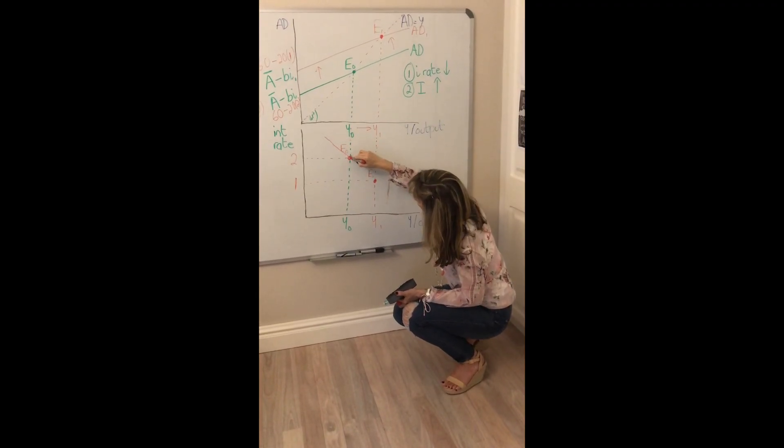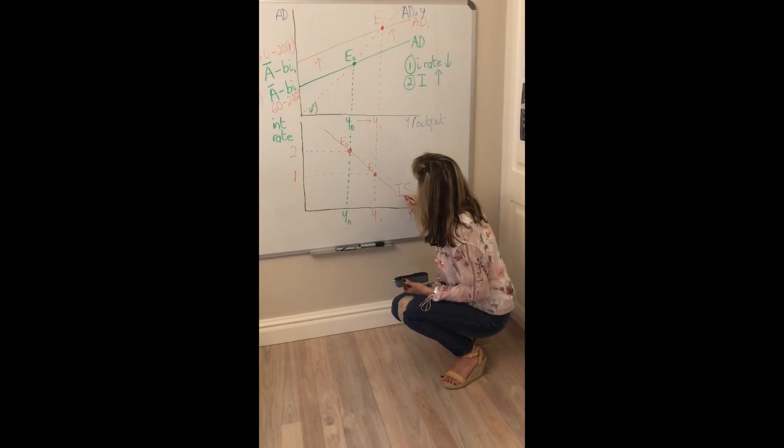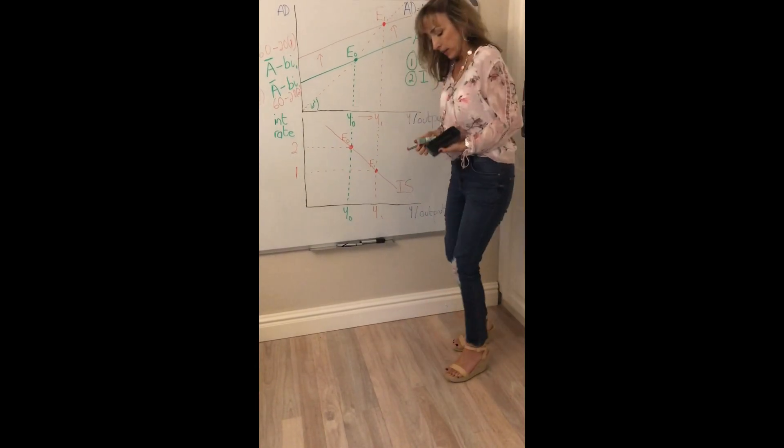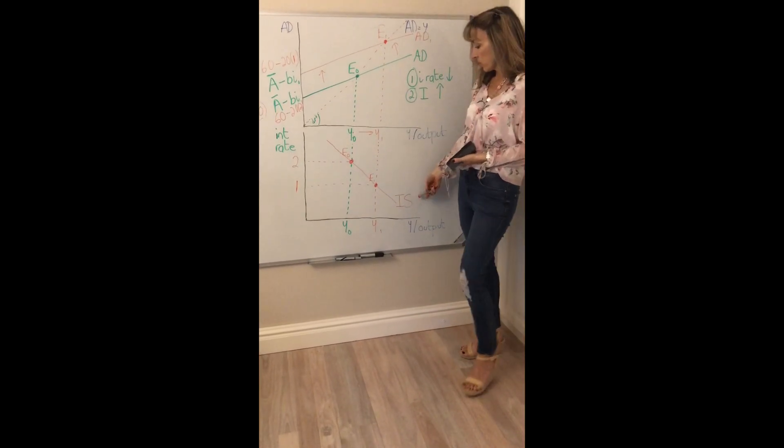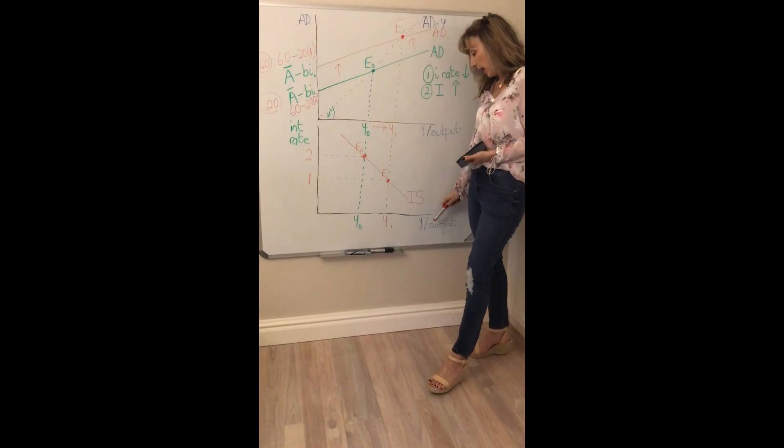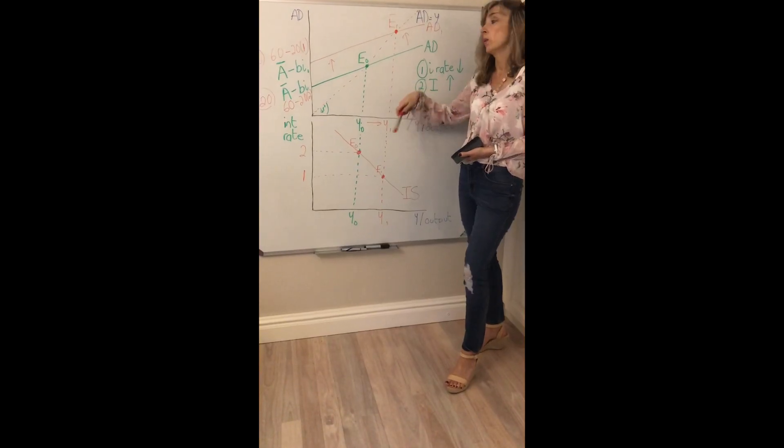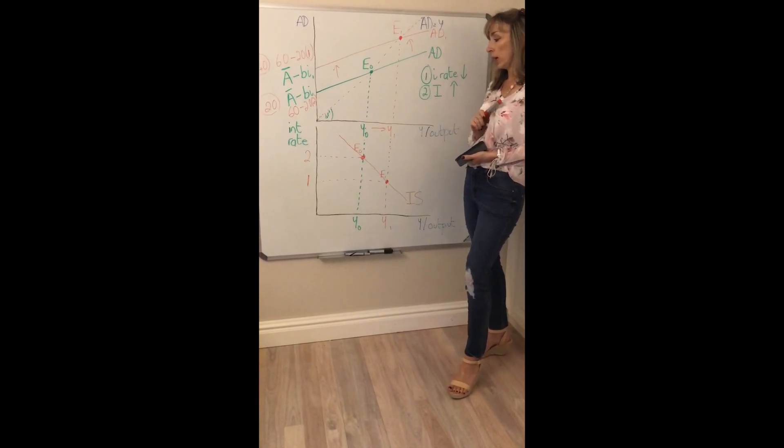And if we join these two things together, put a line through them, we get our IS curve. And what does an IS curve show you? Combinations of the interest rate and income or output that clears the goods market or that is associated with equilibrium in the goods market.